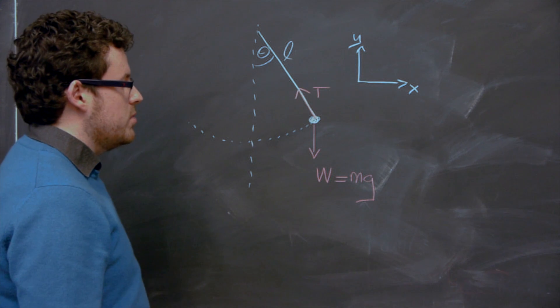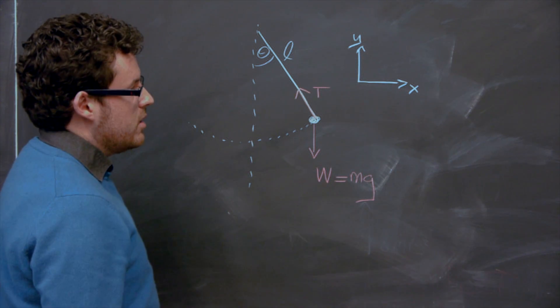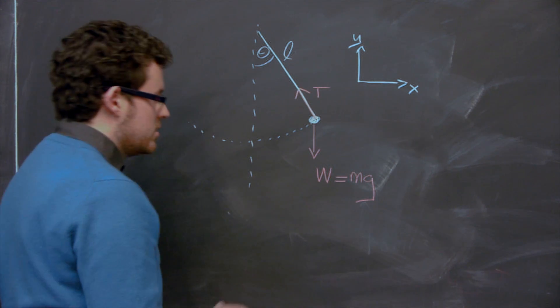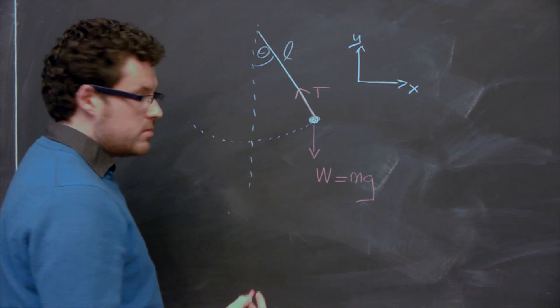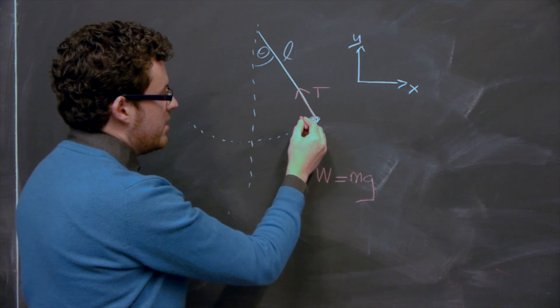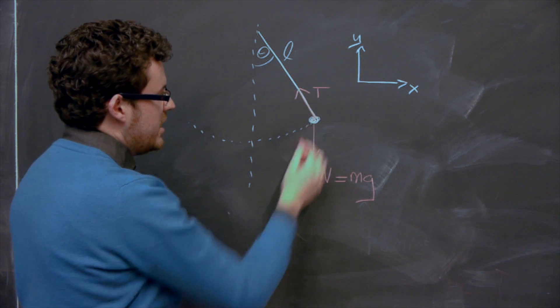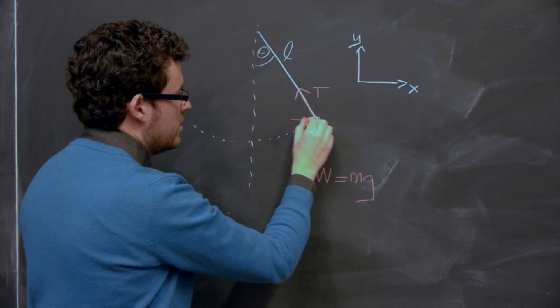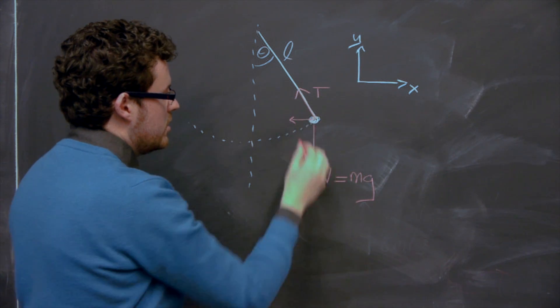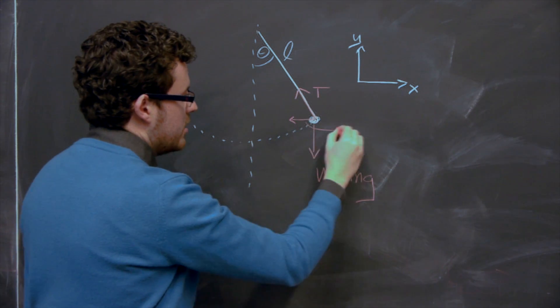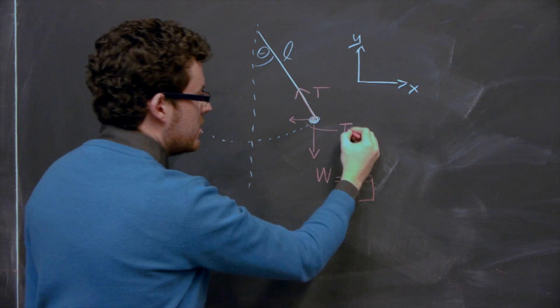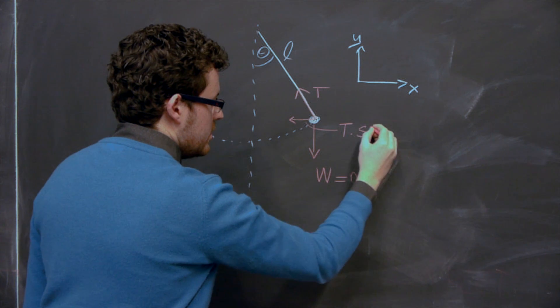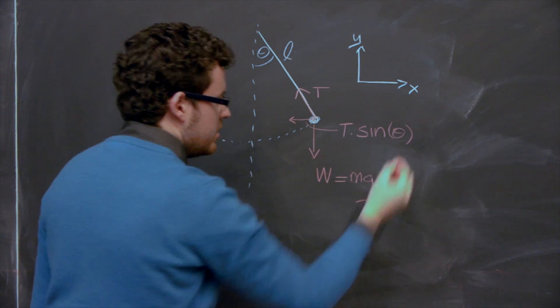So the next step here will be looking at our force diagrams in both the x and the y directions. And this is important here. So the first thing we should do here is we will break down the tension in the string into the x and y directions. So here's the x component, where its value is given by tension in the string times the sine of the angle theta.